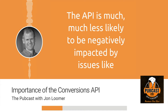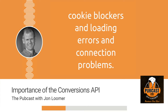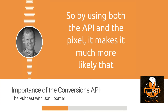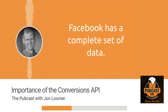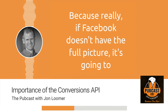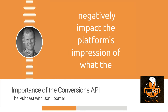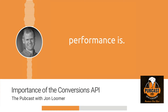The API is much, much less likely to be negatively impacted by issues like cookie blockers, loading errors, and connection problems. So by using both the API and the Pixel, it makes it much more likely that Facebook has a complete set of data. Because if Facebook doesn't have the full picture, it's going to negatively impact the platform's impression of what the performance is.